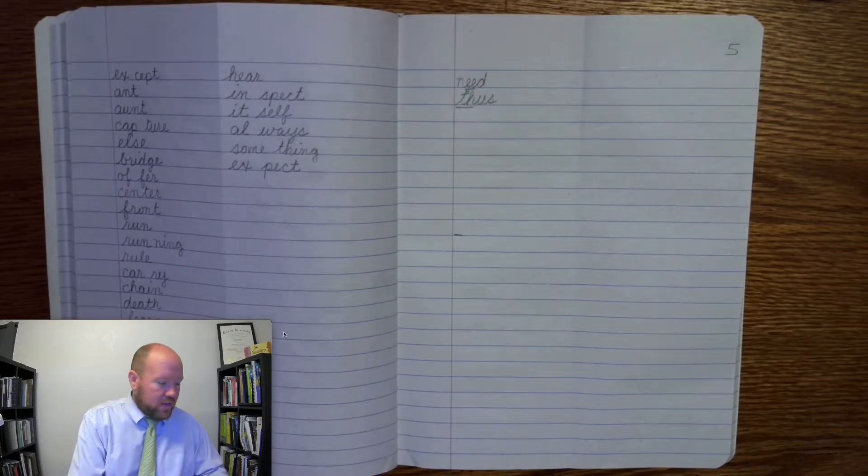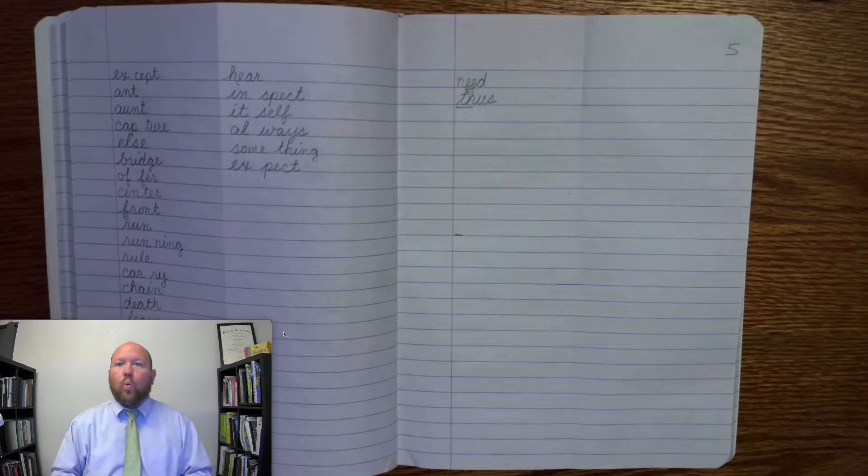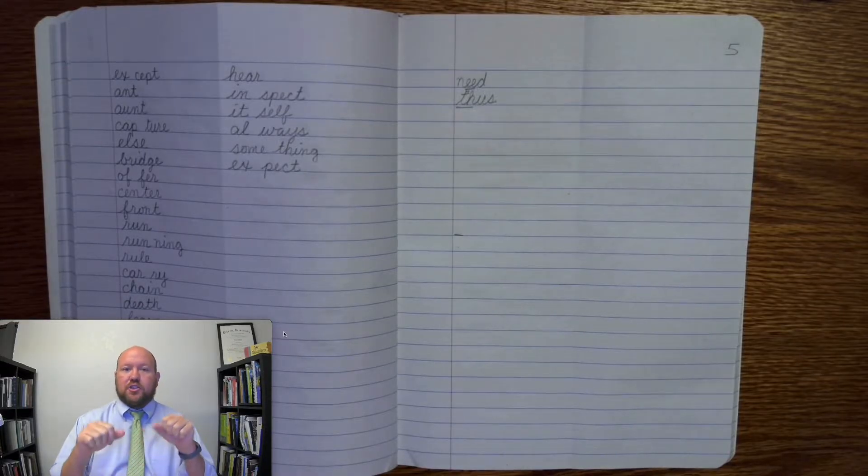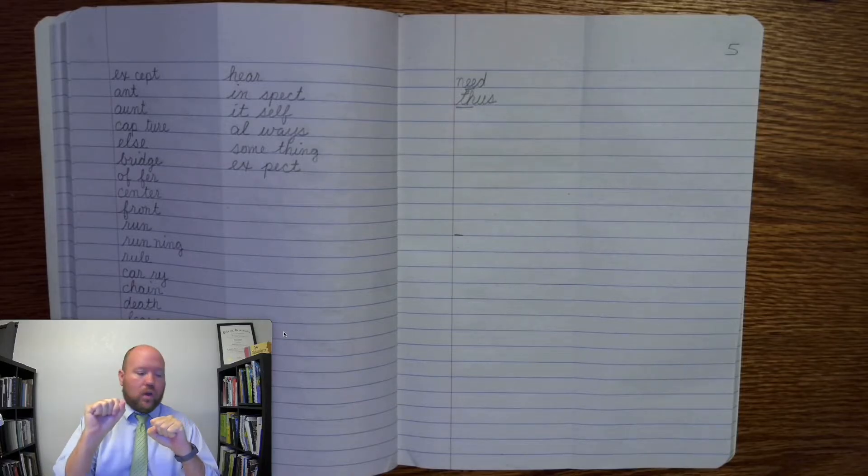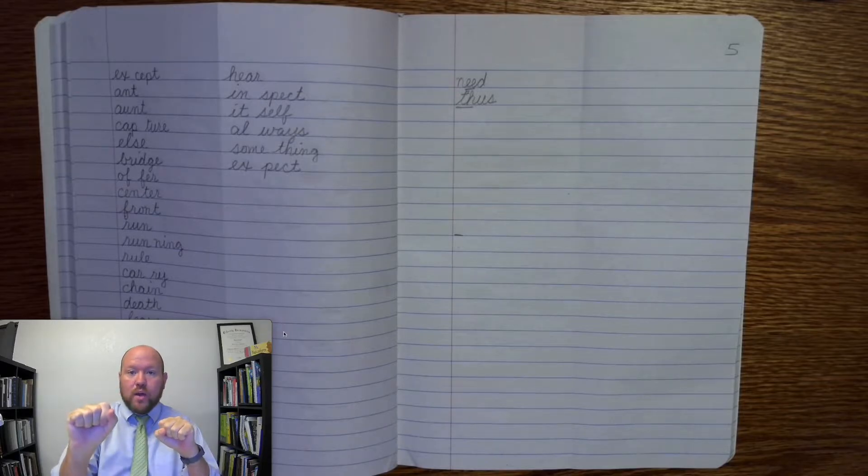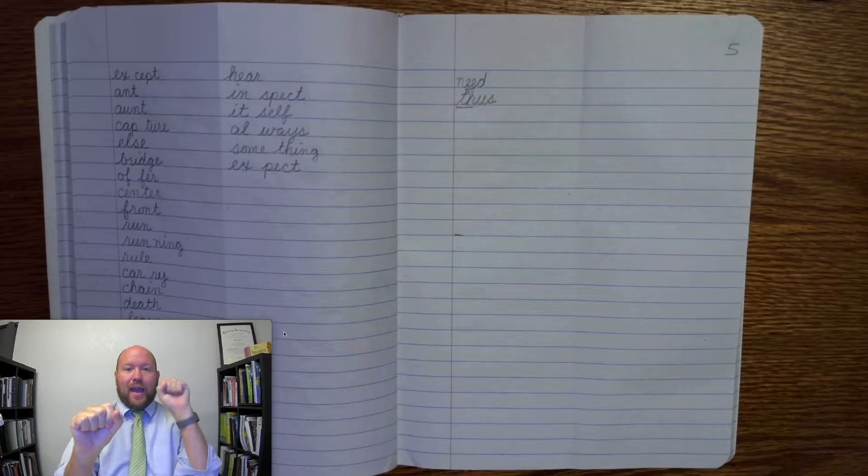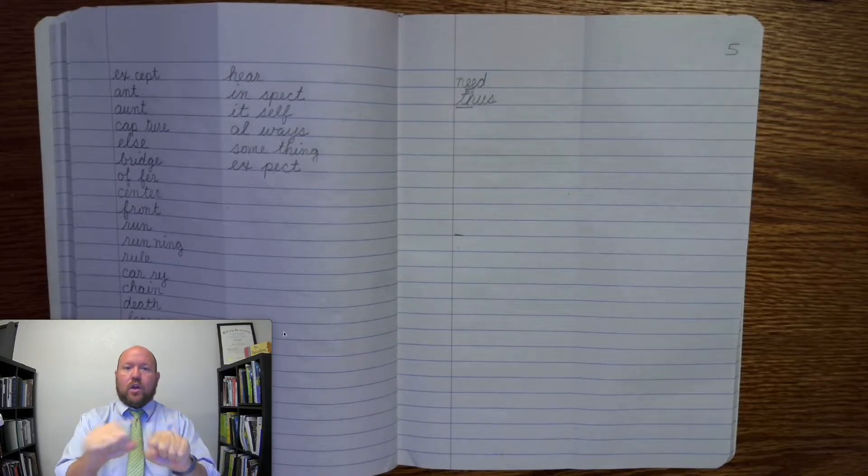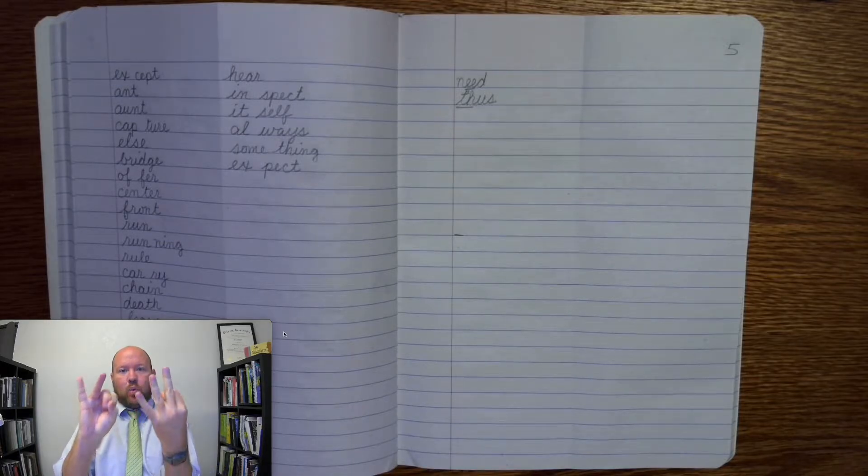Next word is woman. Like, she is a woman. Woman. Base word. Prefix woe, base word man. I write woe, add man to make the word woman. Woe man. W-O, M-A-N. Woman.